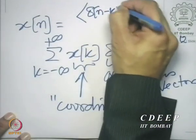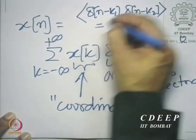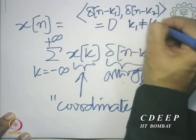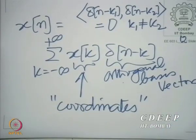In fact, if you take the dot product of δ[n−k₁] and δ[n−k₂], it would be 0 for k₁ not equal to k₂. If the impulse sequences have their non-zero sample located at different points, their dot product is automatically 0 — that is obvious because the non-zero samples do not overlap. So these are all perpendicular directions, and any sequence can be constructed from these countably infinite perpendicular directions.